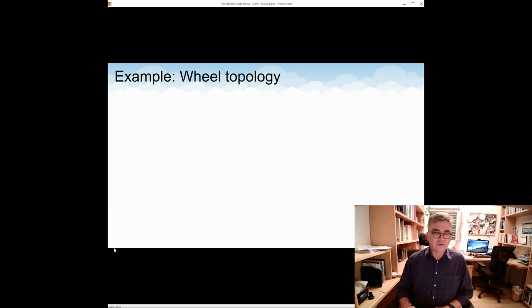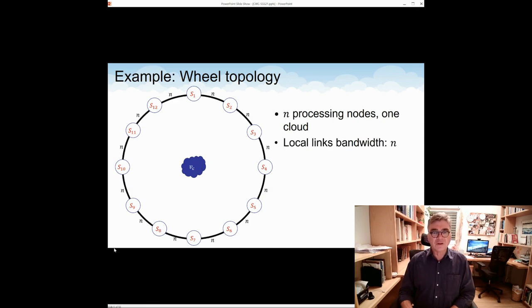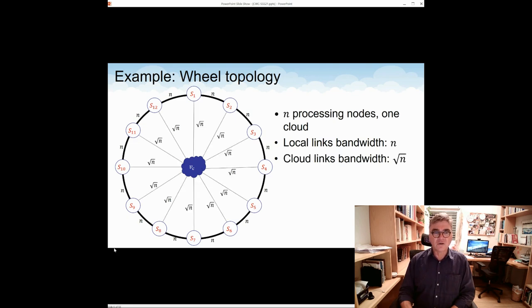To convince you that the CWC model is worth looking at, let me give you an example. The example would be wheel topology. This is a parametric example with a single parameter n. So we have n processors, which you can see here, and a single cloud node in the wheel topology. The processors are connected in a ring topology. So they are all arranged in a cycle, and they are connected like a ring. And the bandwidth of any link connecting two processors on the ring is n, that same parameter n. Beside the ring links, there are also links connecting each processor with the cloud node. The bandwidth of these links is much smaller. It's the square root of n. So this concludes the description of the hardware.